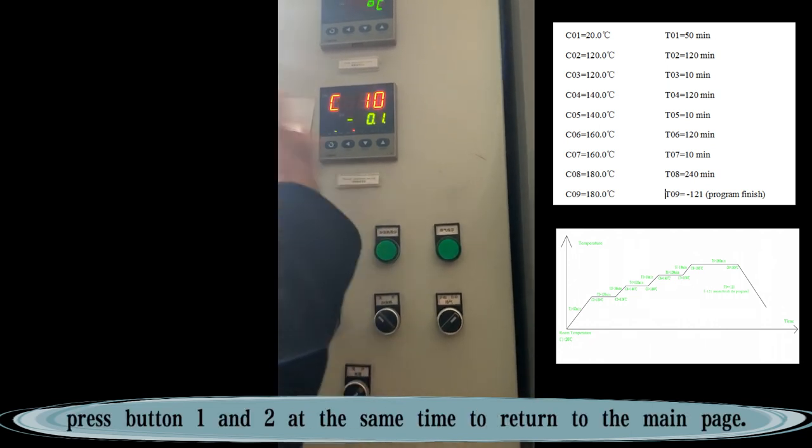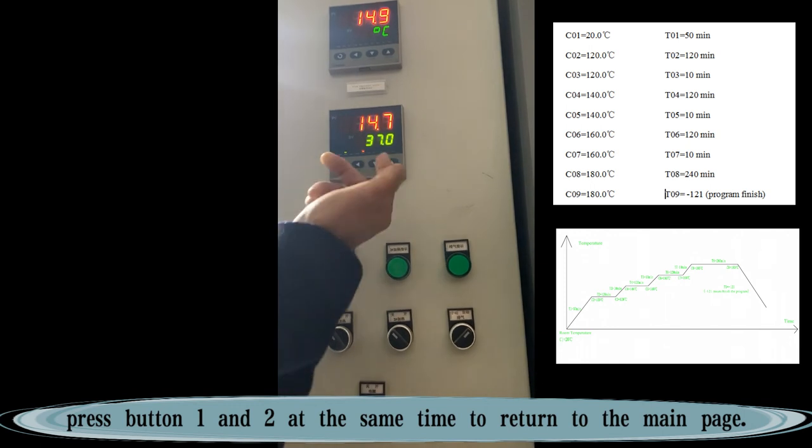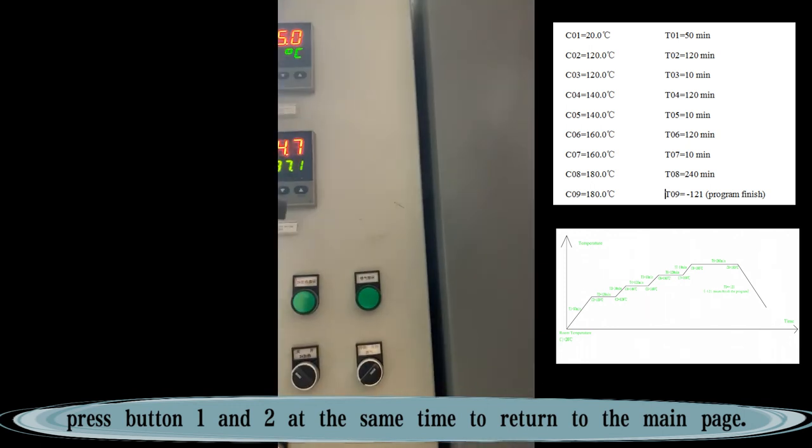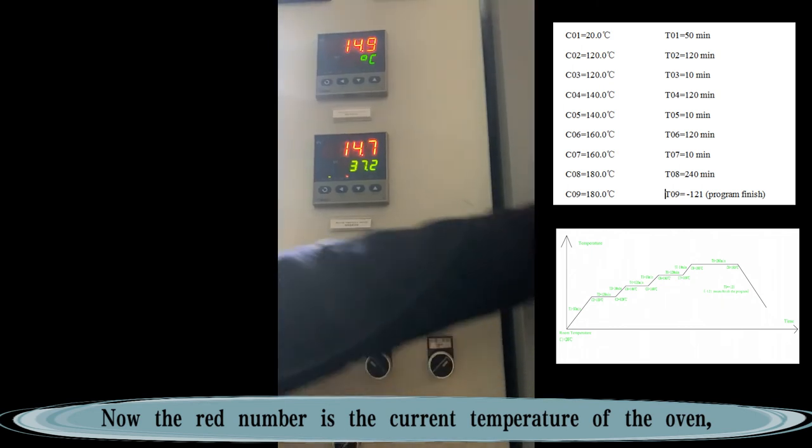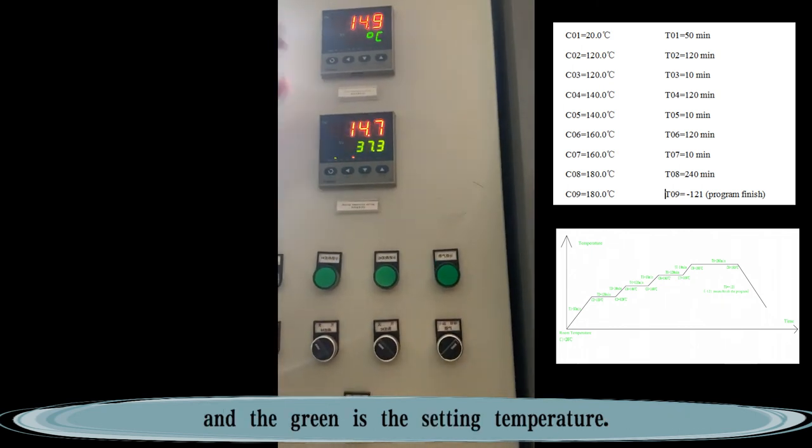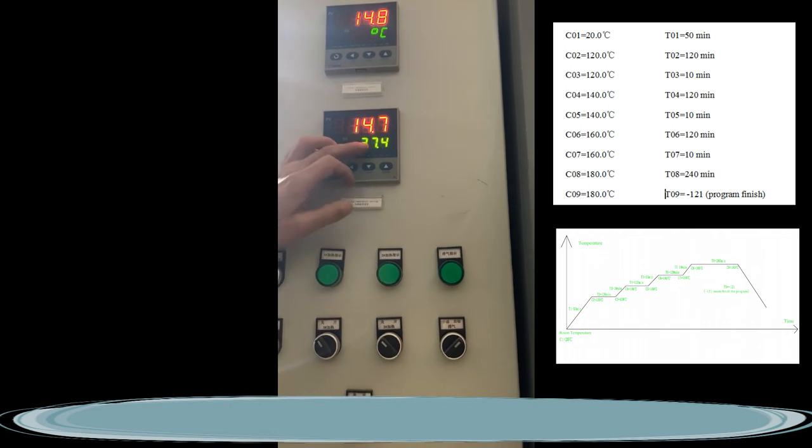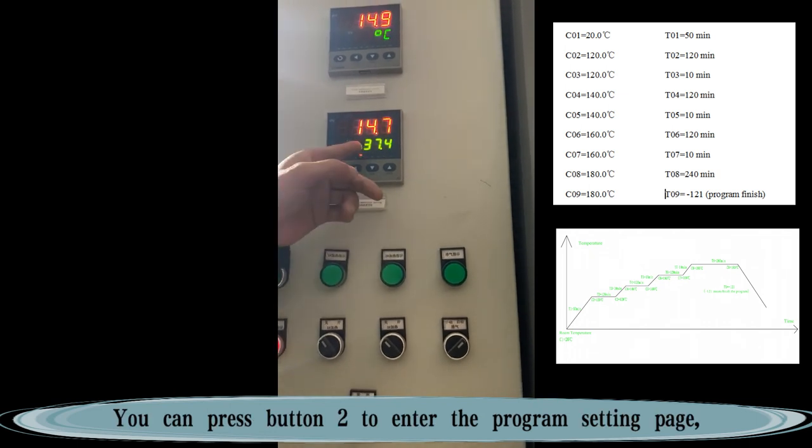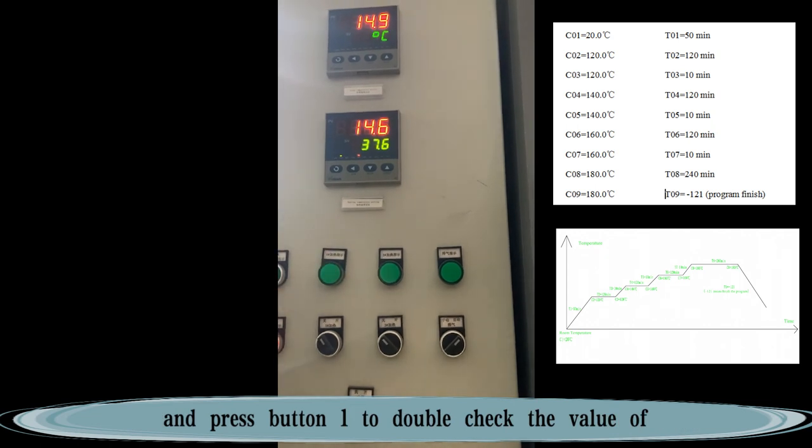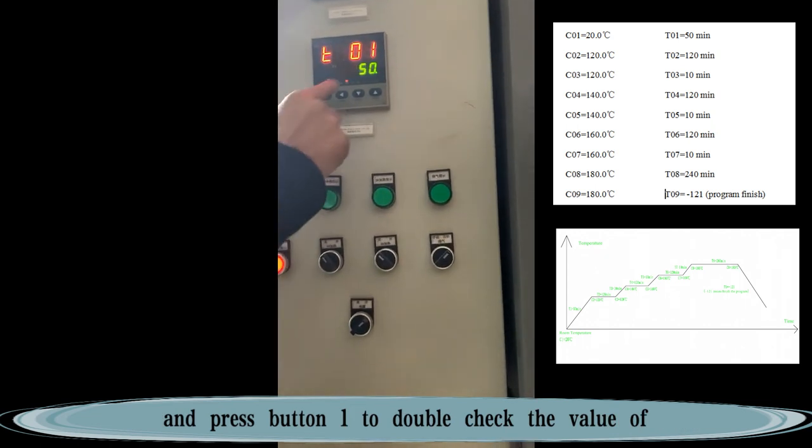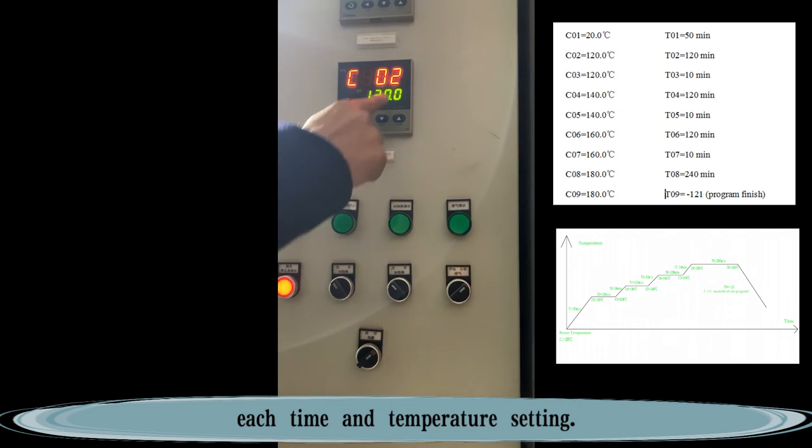After setting the formula, press button 1 and 2 at the same time to return to the main page. Now, the red number is the current temperature of the oven and the green is the setting temperature. You can press button 2 to enter the program setting page and press button 1 to double check the value of each time and temperature setting.